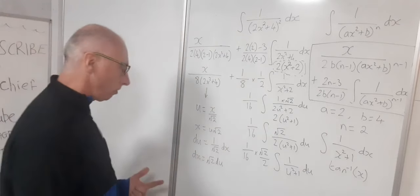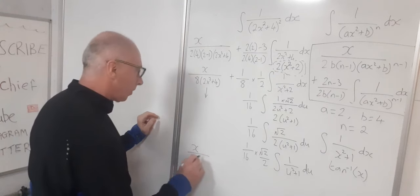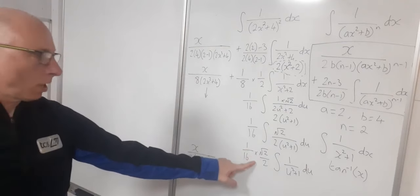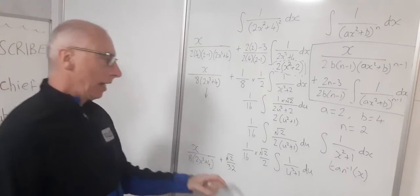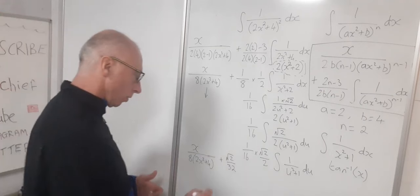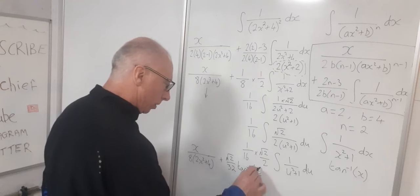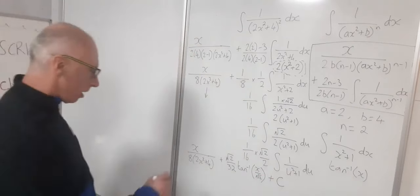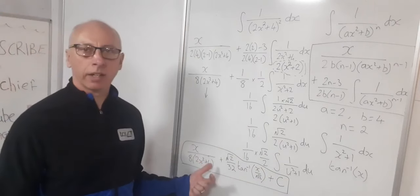Now we can write out our final answer. The first part comes down as x over [8(2x² + 4)]. Then we add √2 over 32 — that's 1/16 × √2/2 — times the inverse tangent of u, where u equals x/√2. So therefore it's the inverse tangent of x/√2. The complete answer is: x over [8(2x² + 4)] plus (√2/32) arctan(x/√2) plus C. That completes our integral. We could simplify further — for example expanding the 8 part — but I'll leave that to you.